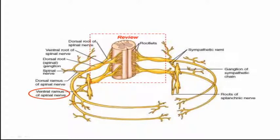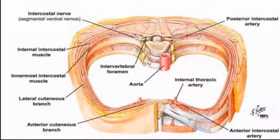Looking at the diagram, you can see the rootlets, the anterior rami, and the dorsal or posterior rami. The ventral or anterior rami travel through the intercostal spaces and supply the lateral branches, anterior branches, and dorsal branches to the muscles of the thoracic region. These nerves travel together with the vessels, which we can remember using the mnemonic VAN — Vein, Artery, Nerve — from superior to inferior.